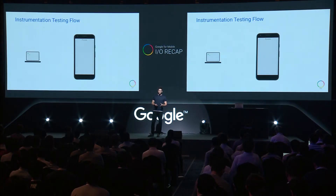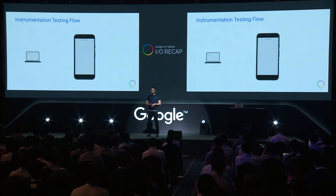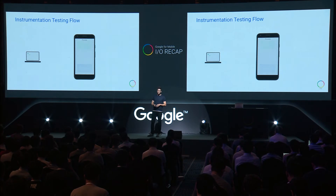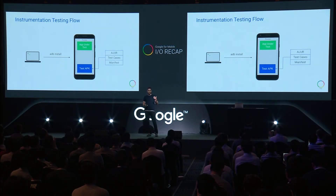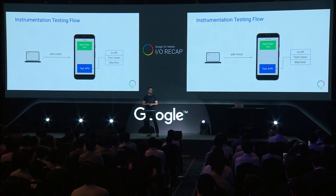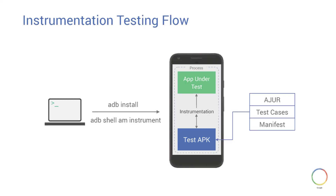Going back to our example, one obvious difference from Robolectric is that these tests run in a real environment using a real device to get this higher fidelity. When you click the run button in Android Studio, the first thing that happens is Android Studio installs two APKs: the test APK and the app under test APK. The test APK contains your Android unit runner, the test manifest, and the test cases. Android Studio then runs an AM instrument command, which makes the Android unit runner run all your test cases against the APK under test in the same process. This increases execution time and the surface area for failures.